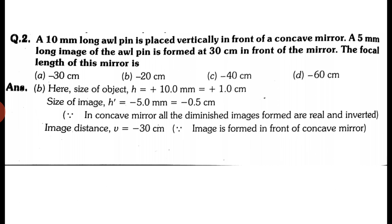For a mirror, we use the mirror formula with a plus sign. The third formula is magnification: m equals h-dash divided by h, which equals minus v divided by u. Remember these formulas and the technique we will use in numericals. Now let's start the numericals.